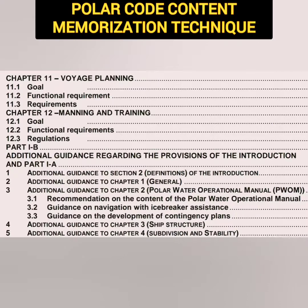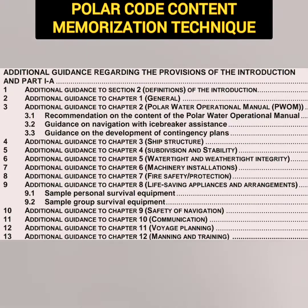Then Part 1B is the additional guidance regarding the provisions of the introduction and Part 1A. As discussed earlier, this has 13 sections — basically additional guidance to section 2 of the introduction, additional guidance to Chapter 1, additional guidance to Chapter 2, additional guidance to Chapter 3, and so on. In addition to the guidance for each chapter, the name of the chapter is written in brackets: general, polar water operational manual, ship structure, subdivision and stability, etc., in the same sequence. So once you remember Part 1A, it is not difficult to remember Part 1B.